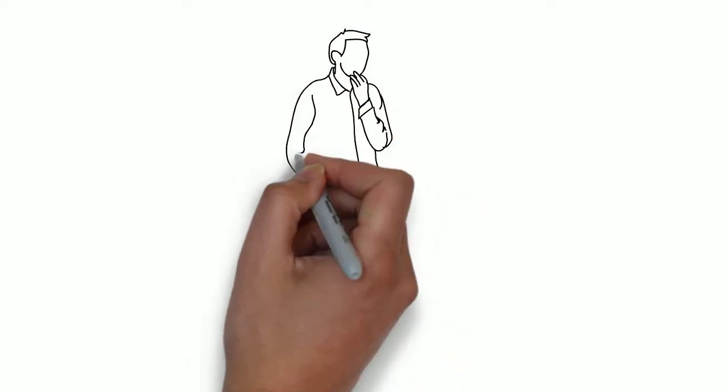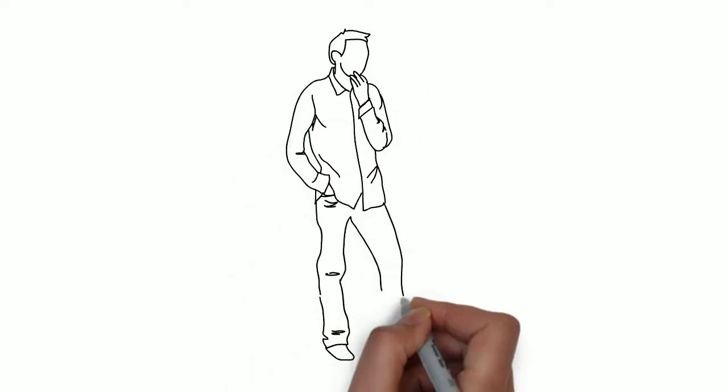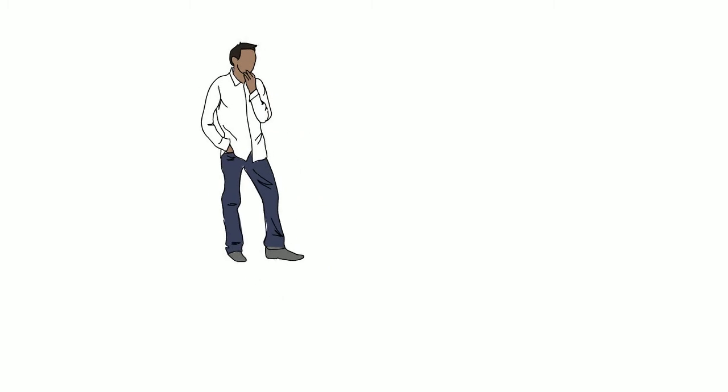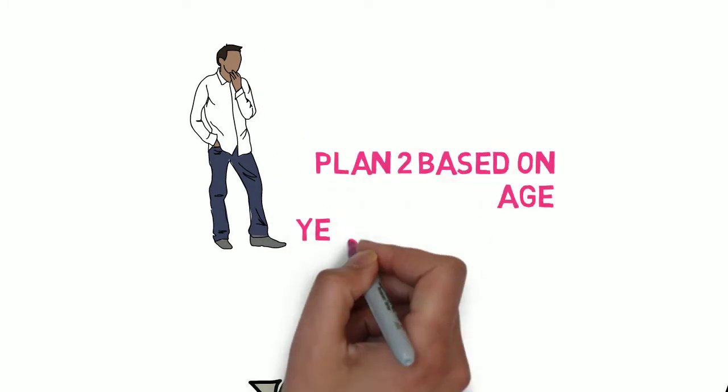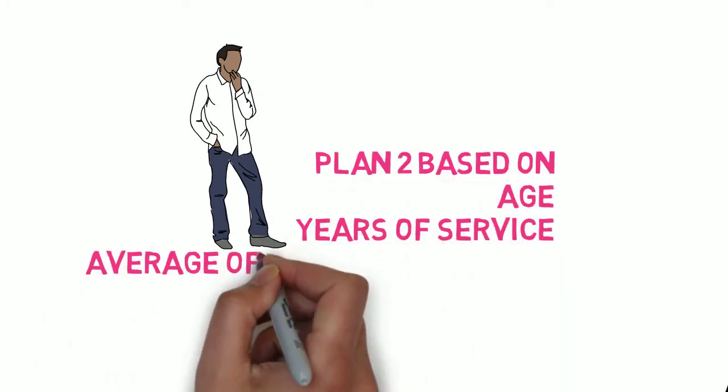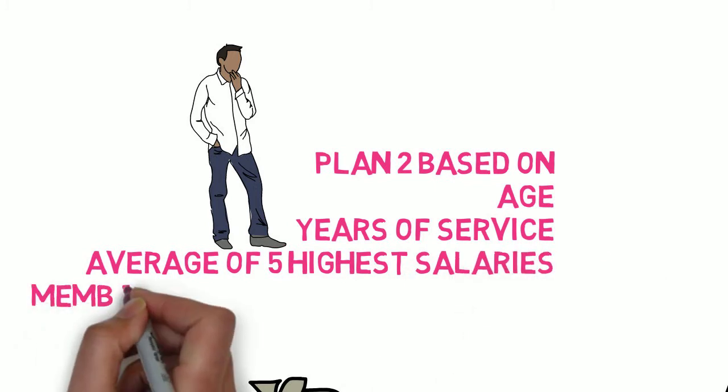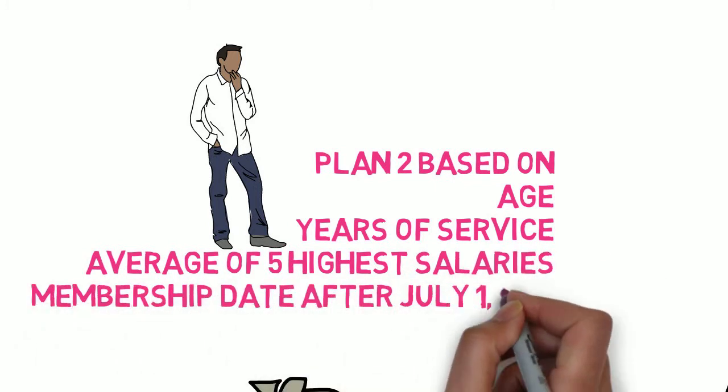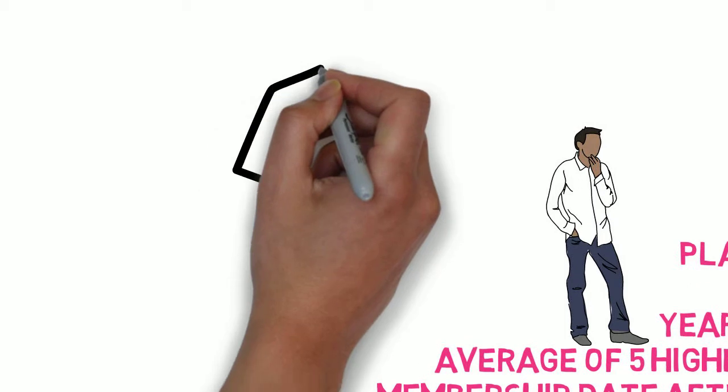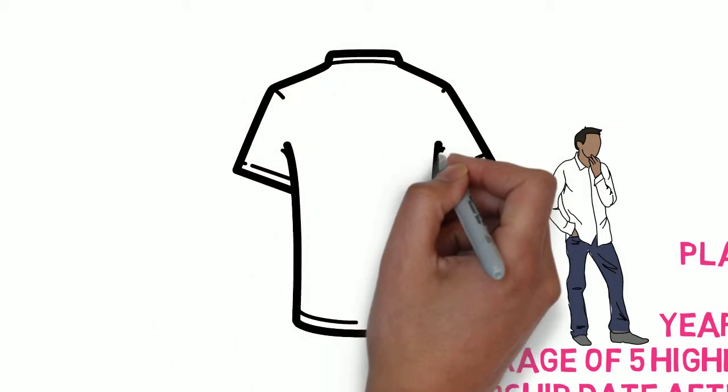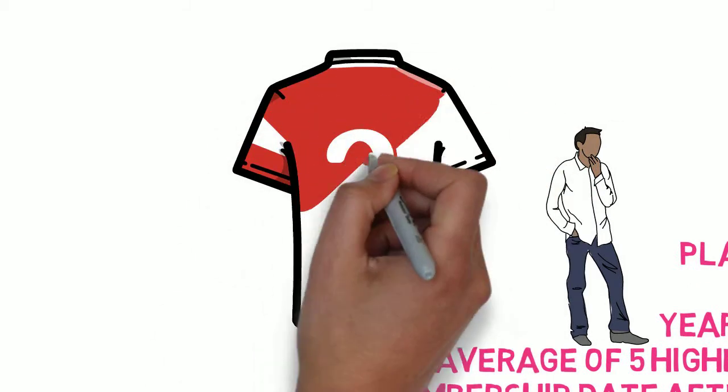VRS Plan 2 is also a defined benefit plan, straight pension. The retirement benefit is based once again on your age, years of service, and how much you made. Employees whose membership date is July 1, 2010 or later and were not vested as of January 1, 2013 are covered under the provisions of VRS Plan 2.